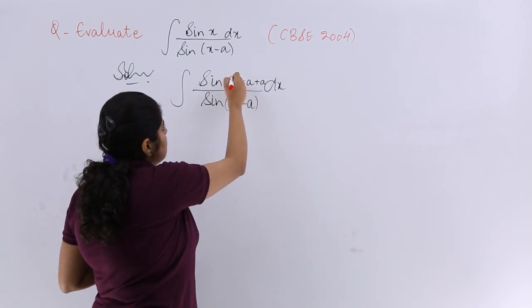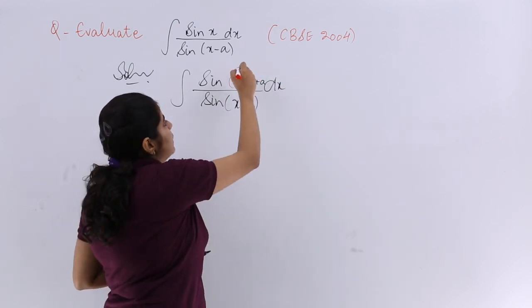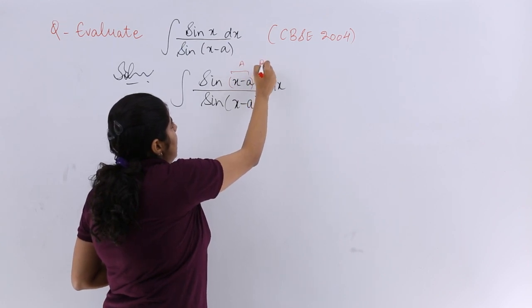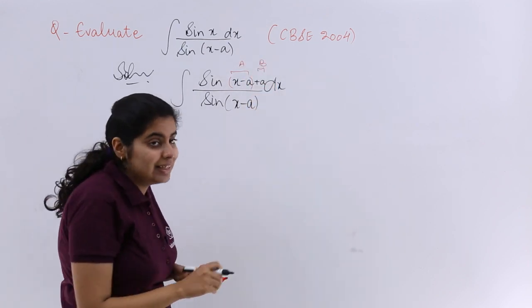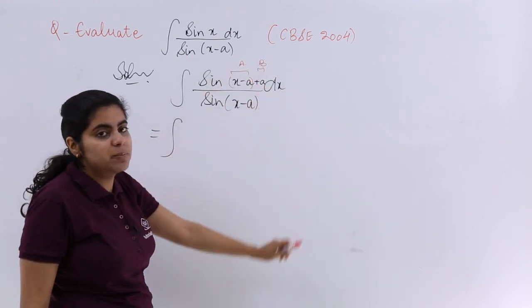So the question doesn't change. Now if I consider x minus a as one term and a as the other term, such that x minus a is my capital A and small a is my capital B, then do you see a formula can be applied? Sin(a+b).